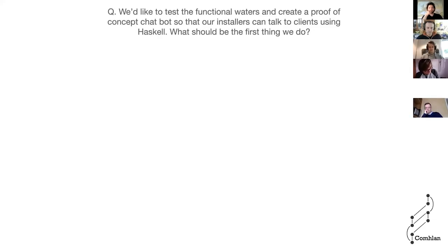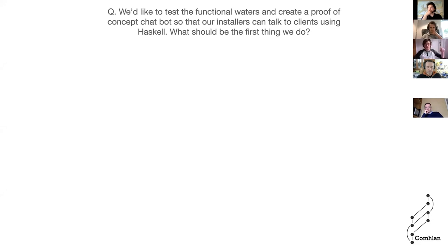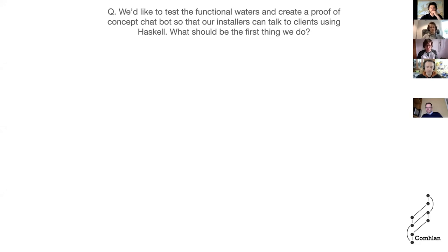I want to answer the following hypothetical question. Let's say somebody comes to you and says we want to test the waters of functional programming and create a little proof-of-concept chatbot, so that our installers — it's a company with installation specialists — can talk to clients. We want to build it using Haskell. What would the first thing we should do be?